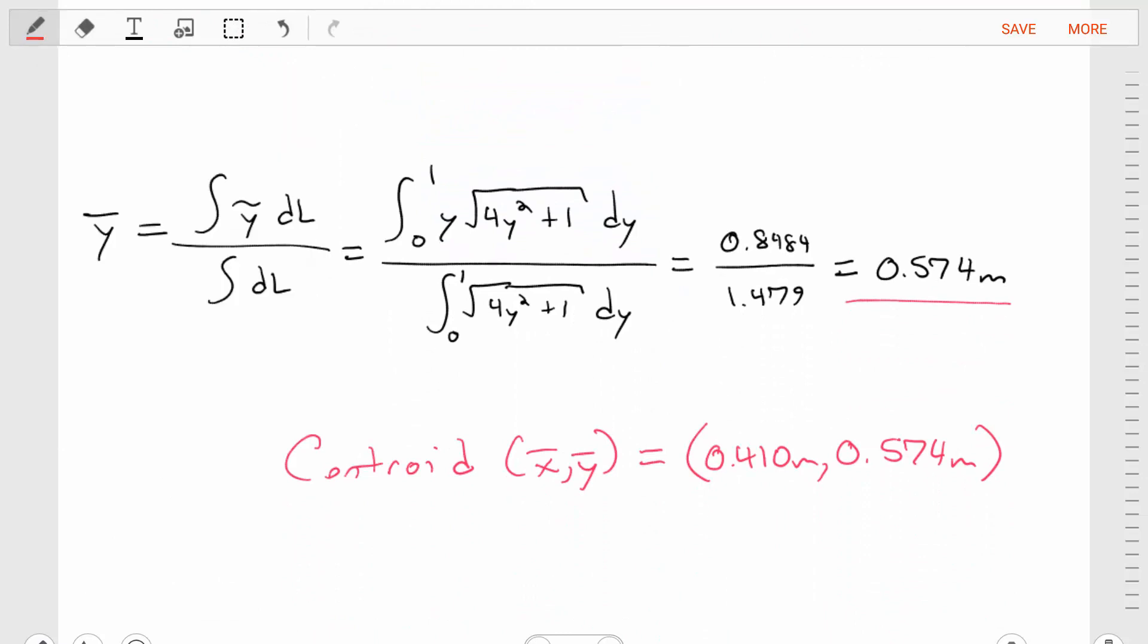And what we'll do is we'll take the known equation that y-bar is equal to the integral of y-tilde over the differential length divided by the integral over the differential length. We'll replace the y-tilde with y, because we found y-tilde should be equal to y. We replace the dL with the expression that we found. And now everything is in terms of y, and we can do the calculus. Once we do the calculus, we'll find that y-bar is equal to 0.574 meters.